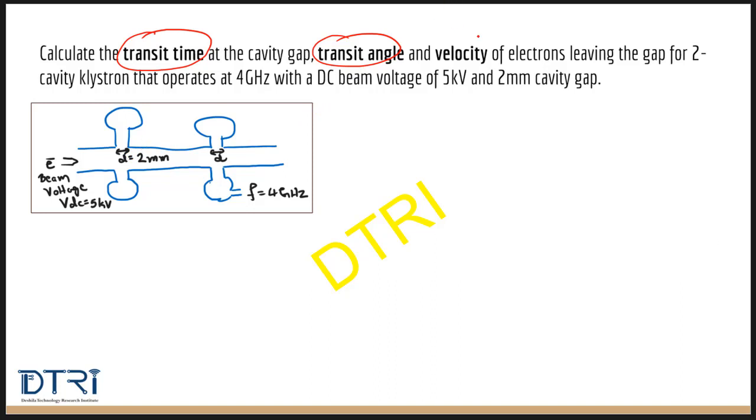Next, what is the velocity? Velocity is related to transit time to say how fast the electrons are moving through the gap.